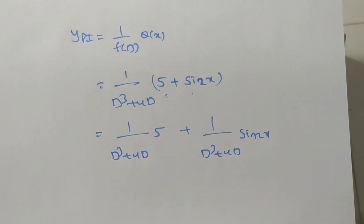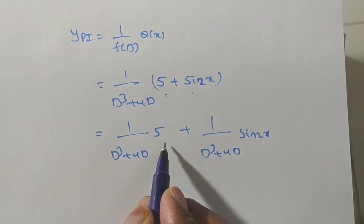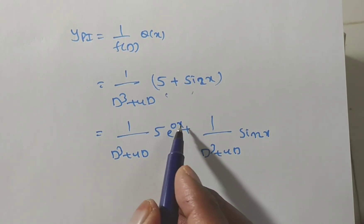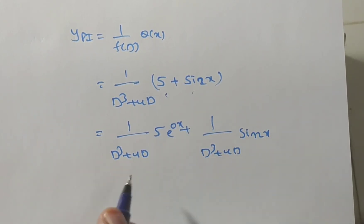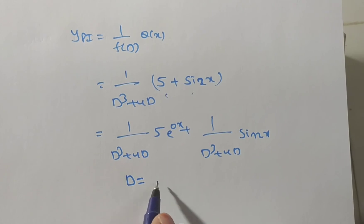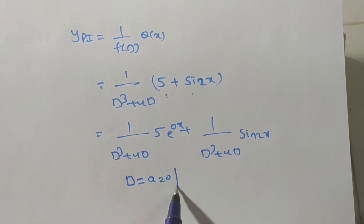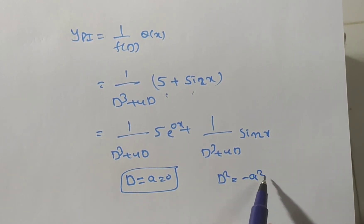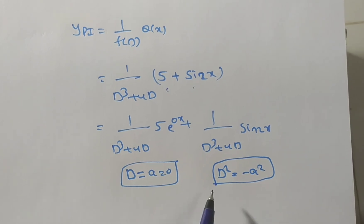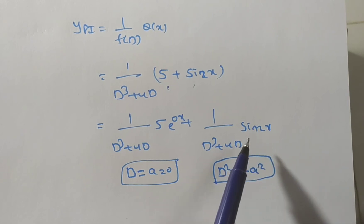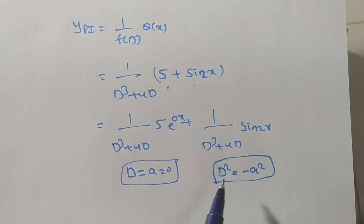We write 5 as 5·e^(0x). For e^(ax), we replace D by a. For sin or cosine terms, we replace D² by −a². We do not replace D directly for sine/cosine, because differentiating sin(2x) gives cos(2x)·2, not sin(2x). The replacement applies only to even-order derivatives: D², D⁴, D⁶.